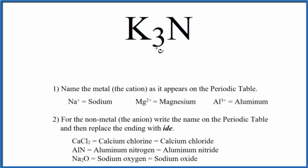To write the name for K3N, we first need to recognize that we have an ionic compound here. That's because potassium is a metal and nitrogen is a non-metal. A metal and a non-metal gives us an ionic compound.